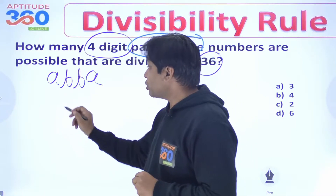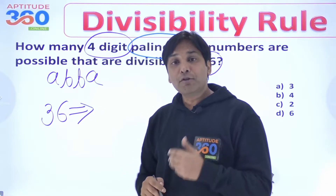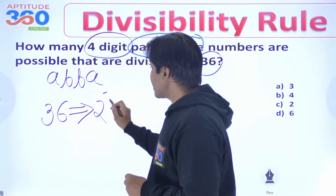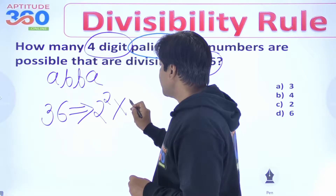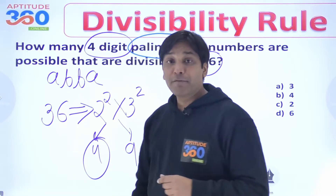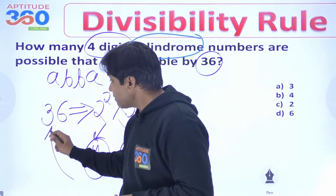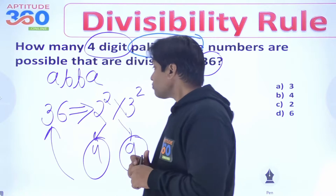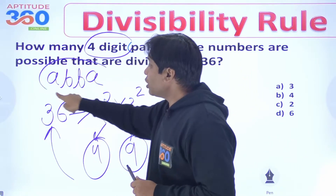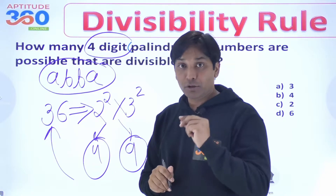The second thing you need to understand is: what is going to be the divisibility rule of 36? And if you have seen video number 2, the divisibility rule of 36 — if you do the prime factorization — is 2 squared and 3 squared, or 4 and 9. A number divisible by both 4 and 9 is certainly going to be divisible by 36. So we have to apply divisibility rule of 4 and divisibility rule of 9 to this structure.